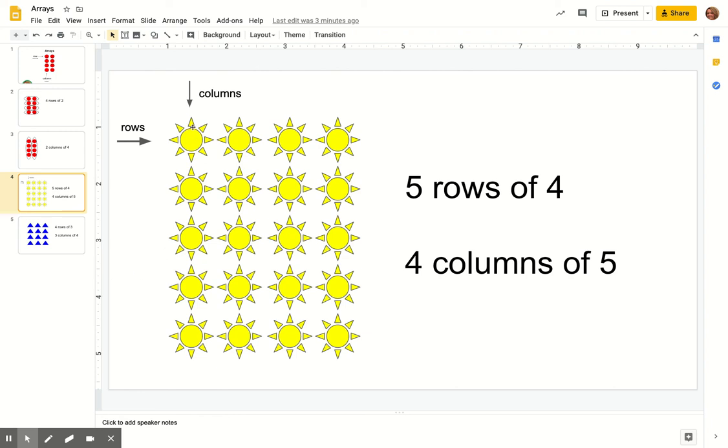And then our columns. We have one, two, three, four columns. And in each column we have one, two, three, four, five. So we have four columns of five.